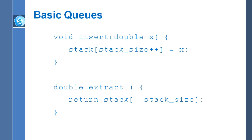The extraction function is also very simple: it returns stack[--stack_size]. If we just inserted one number, stack_size is one. If we immediately follow that insertion with an extract, it first decrements stack_size from one to zero, then returns the data stored at position zero — exactly the datum that was previously stored using insert.